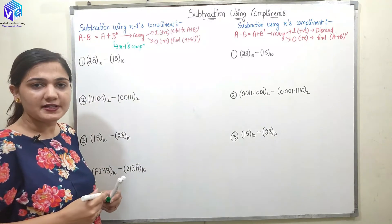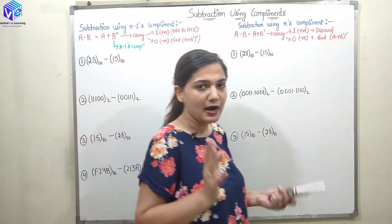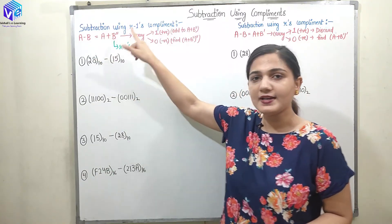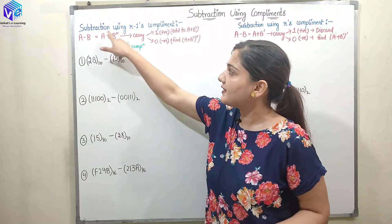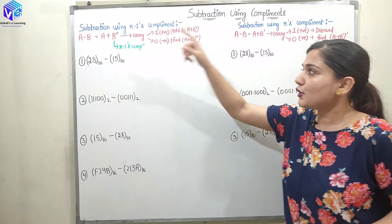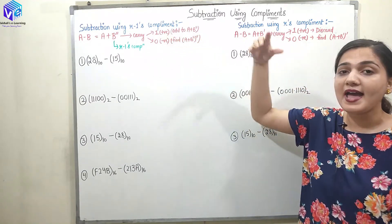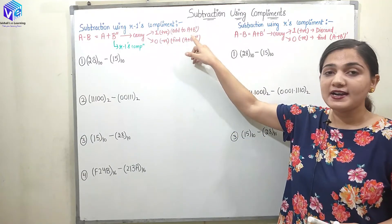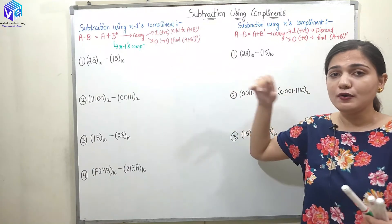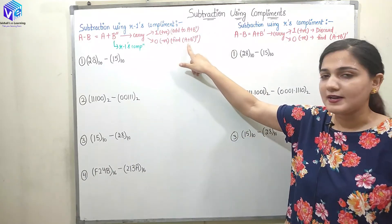R-1's complement is represented by double dash — the same representation used in the last video. Now we will find out B double dash; we are now very much aware how we can find out the R-1's complement of B. We can find out A plus the R-1's complement of B and add these two numbers, then look for the carry. If the carry is 1, the output is a positive number and we have to add this carry to A plus B double dash to get the final output. If the carry is 0, the output is a negative number and we just need to find out the R-1's complement of A plus B double dash.